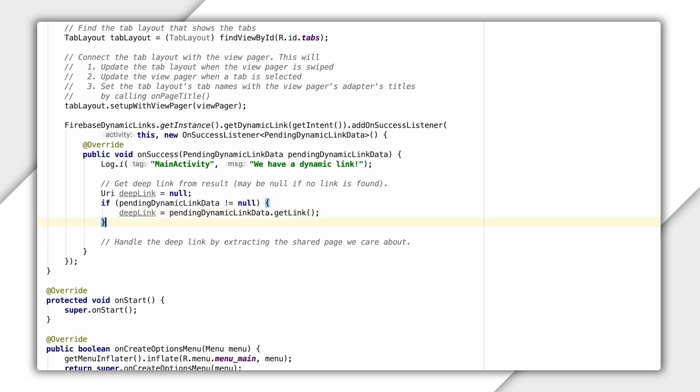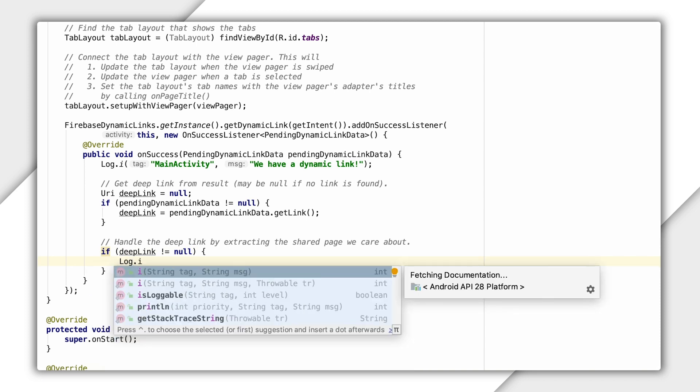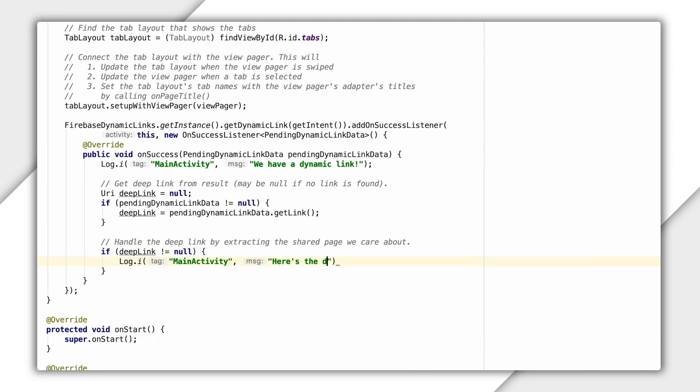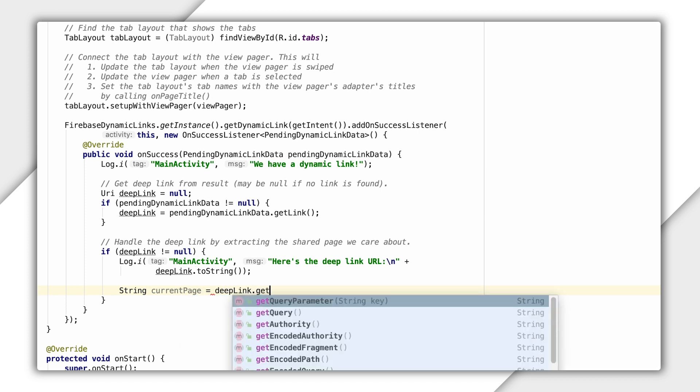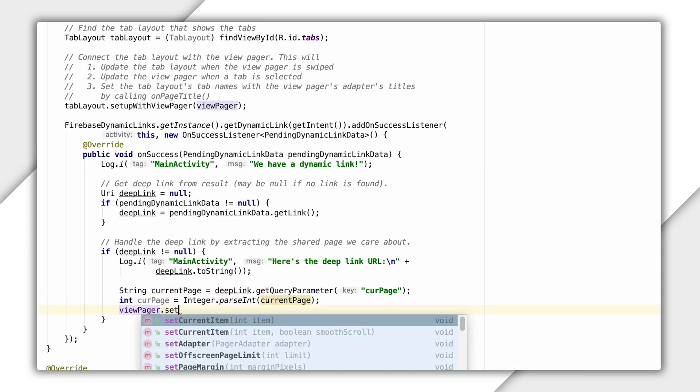Okay. And now that we have our Deep Link data, let's just log that too so that we know we've extracted it. So if Deep Link not equal to null, log.i, my main activity, here's the Deep Link URL, and I'll display what the Deep Link URL is that we've captured. And finally, I'll add some link handling code specific to my sample app. In this case, I'll be setting the view pager to a specific page in my app based on a current page parameter, denoted by cur page in my Deep Link URL, and I'll send the user who clicked on this link to the appropriate part of my app.